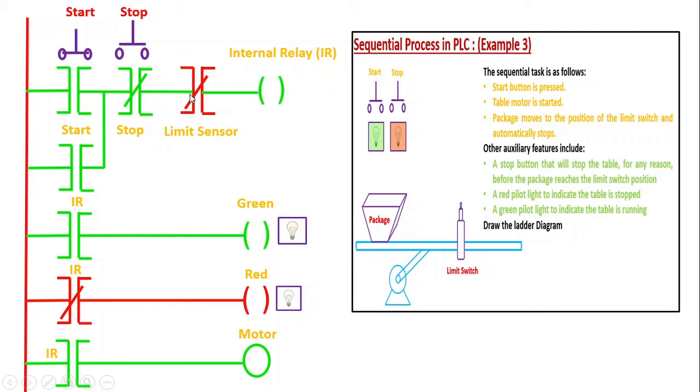And at that time, which was normally closed contact acts as open circuit because it is a normally closed contact. So it was initially closed. Once it is energized, it will act as open circuit.